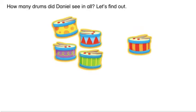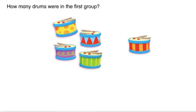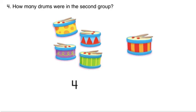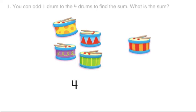How many drums did Daniel see in all? Let's find out. How many drums were in the first group? Four. How many drums were in the second group? One.